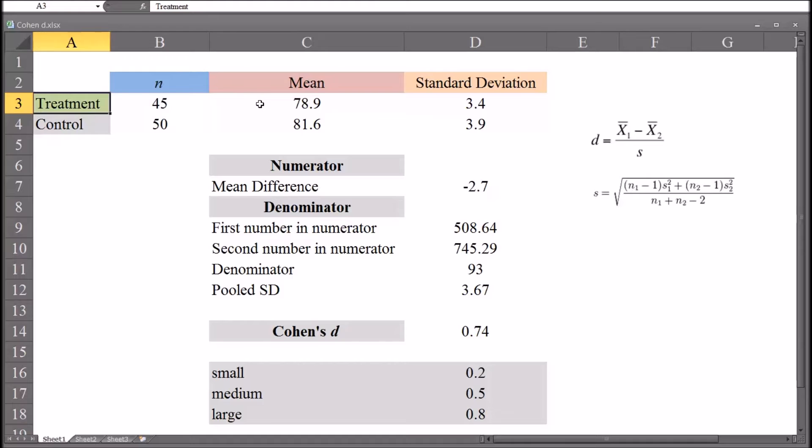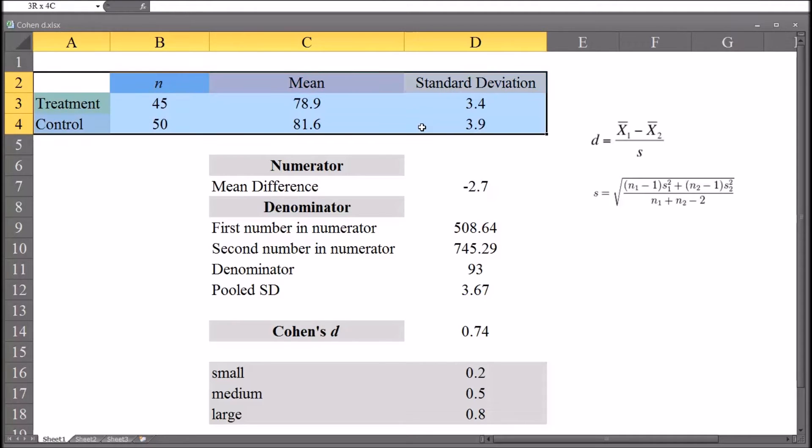They're being assessed with an instrument where a lower score means fewer depressive symptoms. So we have 45 participants in the treatment group, 50 in the control. A mean score of 78.9 for the treatment group and 81.6 for the control. And a standard deviation of 3.4 for the treatment group and 3.9 for the control group. So this is all the information we need to calculate Cohen's d.